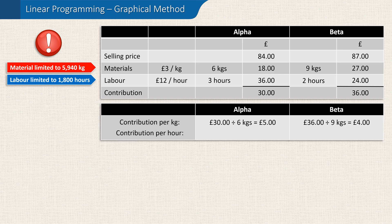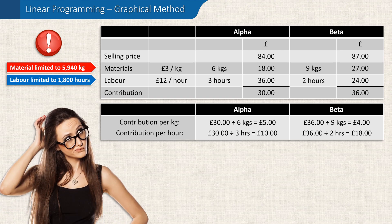Now let's do the same for labour and calculate the contribution per hour for each product. For the alpha, this is £30 divided by 3 hours, which is £10 per hour. Now, this leaves us with a bit of a conundrum. We can see that the contribution per kilogram of material is better for the alpha.